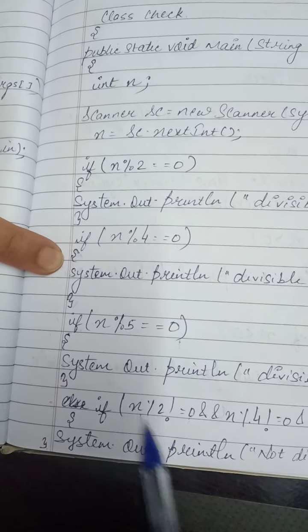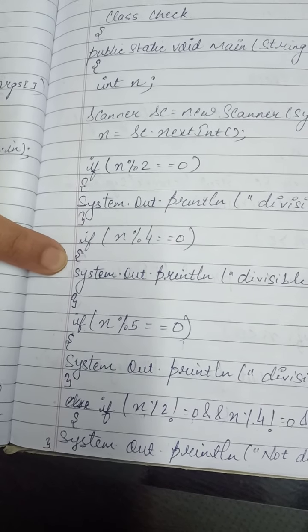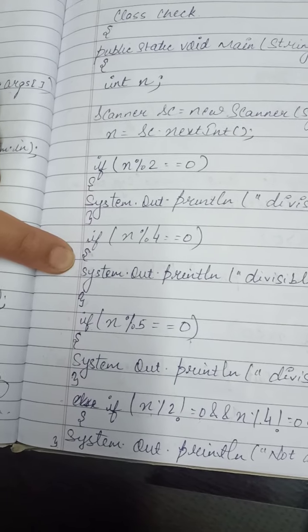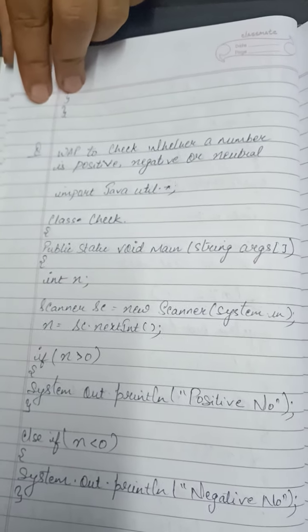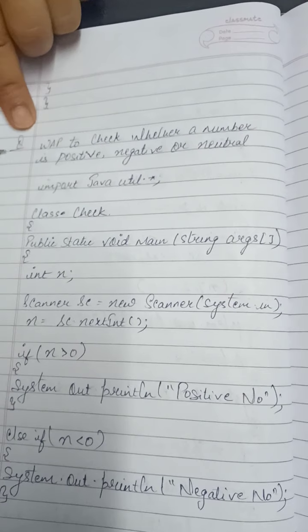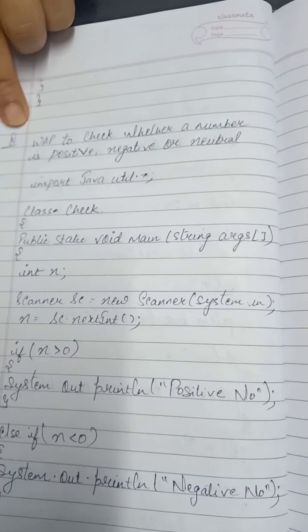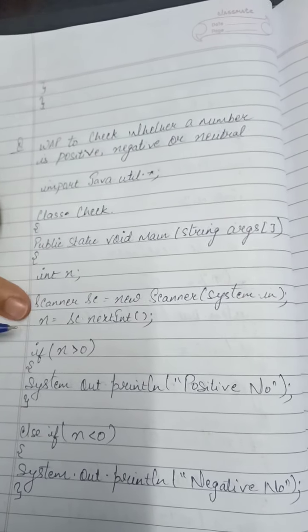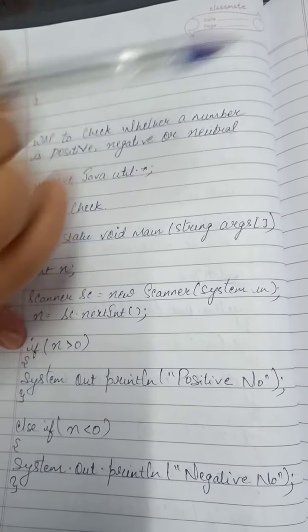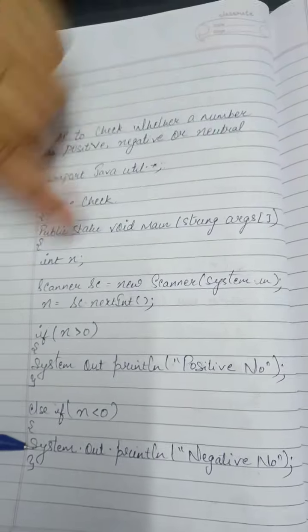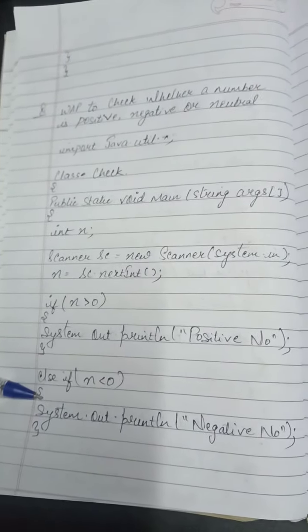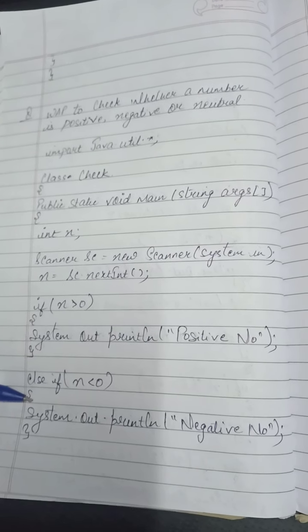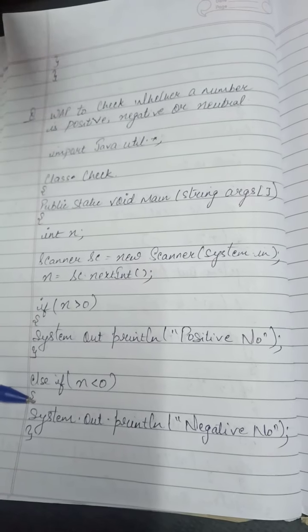This is the program using else-if. The basic difference between else-if and multiple-if: in else-if, I have taken three conditions, and if one is true, it will execute only that statement and stop. But in multiple-if, all conditions that are true will execute — all the true conditions print their corresponding statements.